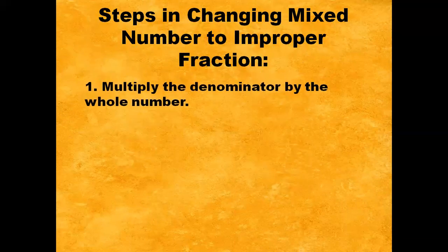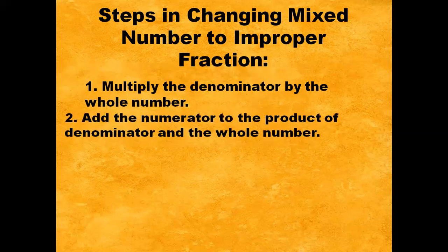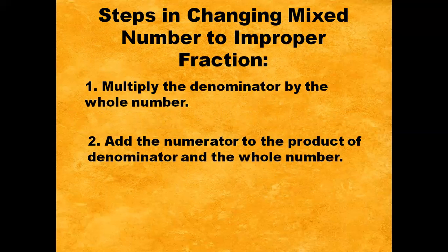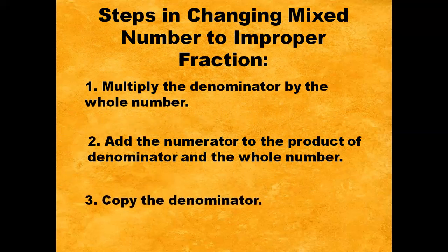Step number one: multiply the denominator by the whole number. Step number two: add the numerator to the product of the denominator and the whole number. And step number three: copy the denominator.